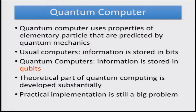We started off the idea of quantum computers from the very idea that a quantum computer uses properties of elementary particles that are predicted by quantum mechanics. In general, we are used to the idea of computers where the information is stored in bits. In quantum computers, information is stored in terms of qubits. The theoretical part of quantum computing has been developed substantially based on the idea of these qubits, and the practical implementation, as we have been discussing from the first point onwards, is still a big problem.